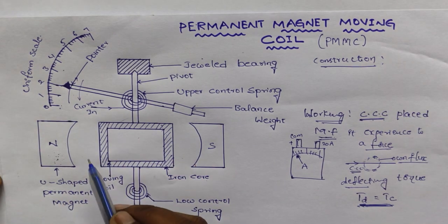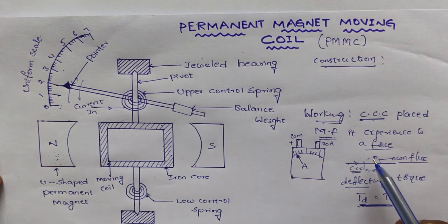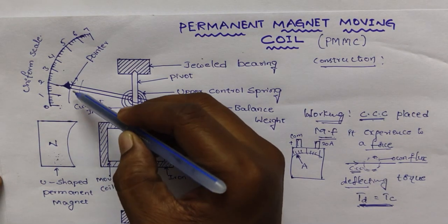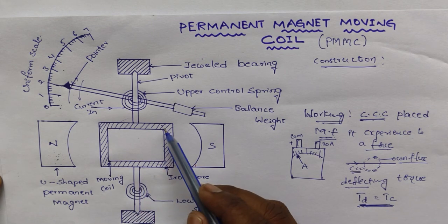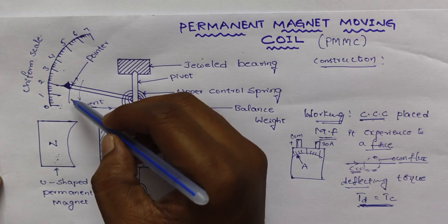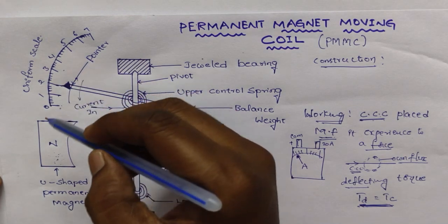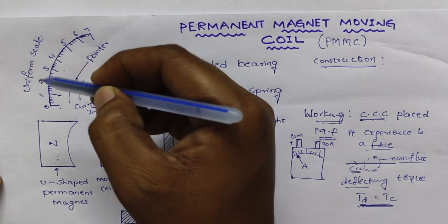Now, the magnitude of force, that is mechanical force, the magnitude of force is directly proportional to current flowing through this coil. If the current flowing through this coil is more, then the deflecting torque is more. Once deflecting torque is more, then the reading is very high.